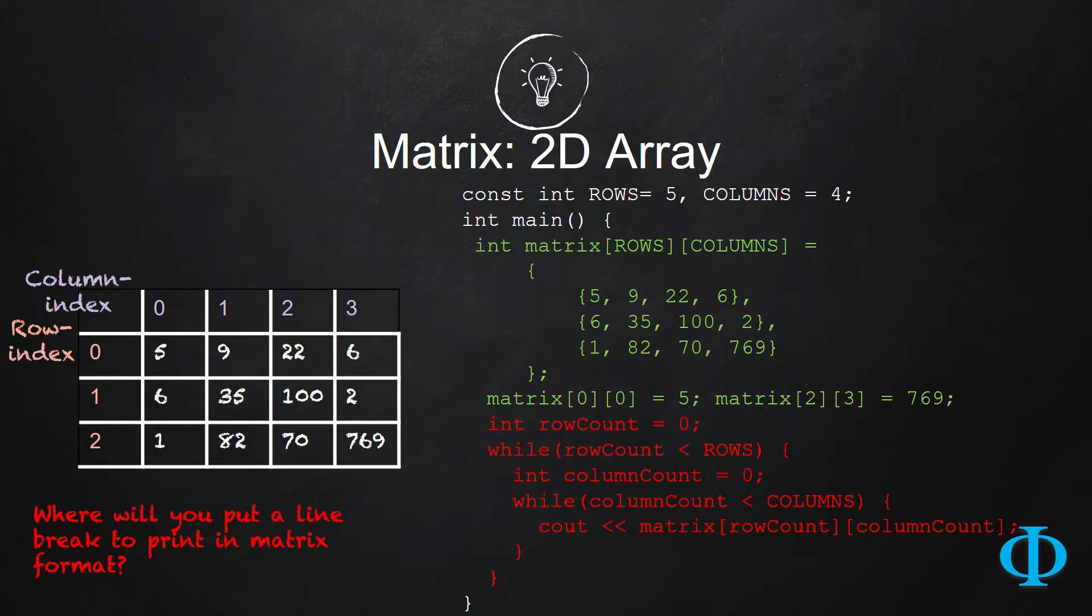Now we are going to learn about matrix in C++. Matrix is just an extended version of C++ array. So far, whatever you have learned with an array, it is one-dimensional. But matrix means it is a two-dimensional array.